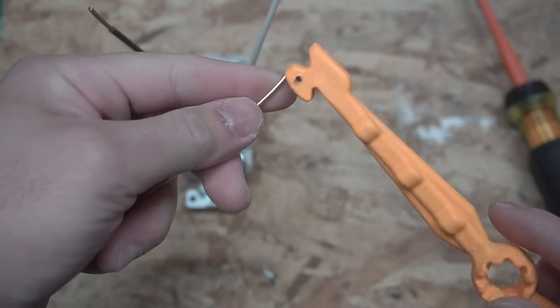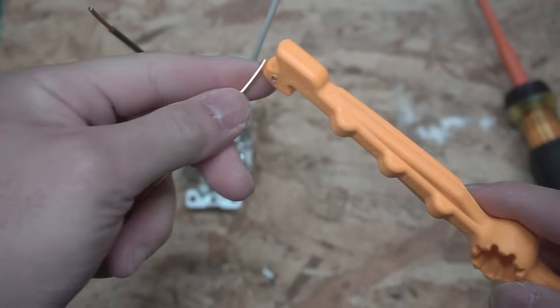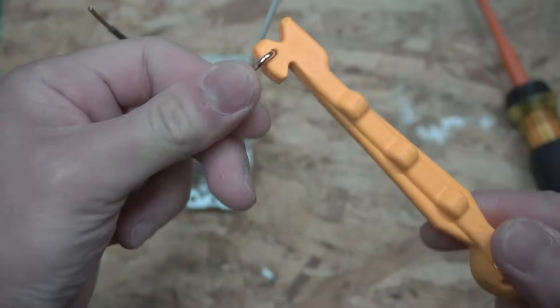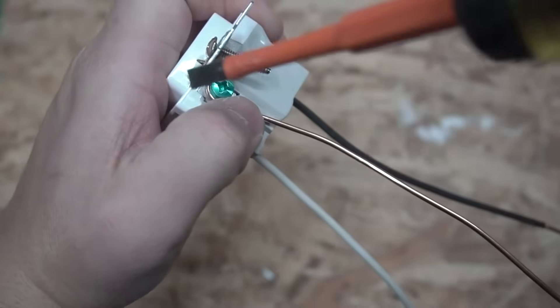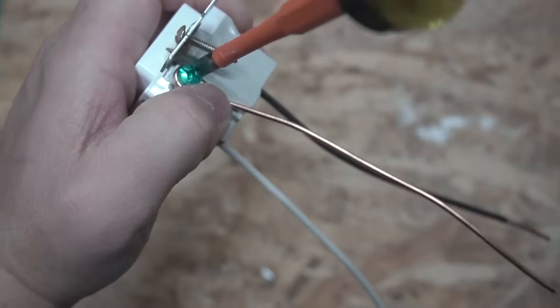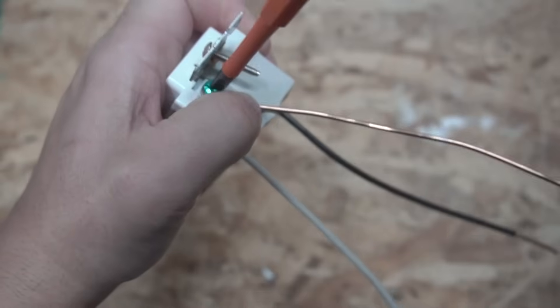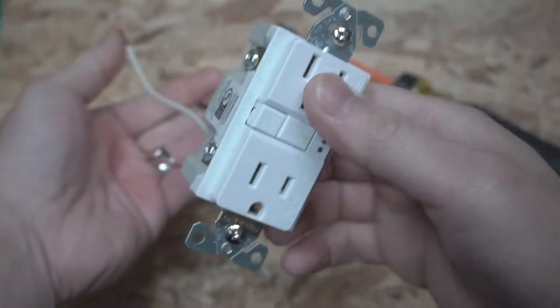We're going to install the ground pigtail. I'm using the volt claw to make that J-hook. Make sure you insert this on a clockwise manner and then tighten that down. So now this is ready to be installed onto our first J-box.